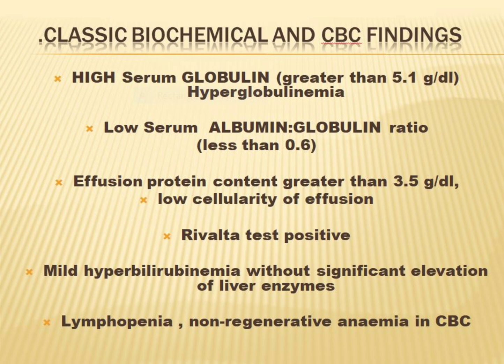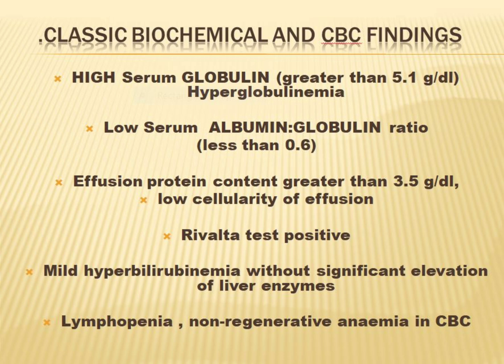If we examine the protein content of the effusion, it is greater than 3.5 grams per deciliter with a very low cell count. The FIP effusion is always an exudate due to its high protein content. We can also see slight jaundice with mildly elevated bilirubin, but what makes this special is that the jaundice occurs without any dramatic increase in liver enzymes. There can also be non-regenerative anemia and lymphopenia on CBC, which indicates a chronic disease process.